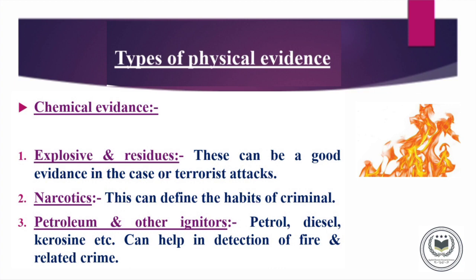Our next category is Chemical Evidences. Basically, we consider chemicals such as Explosives, Narcotics, Petroleum, and other Ignitors. There are three categories of Chemical Evidences in a Crime Scene: First, Explosives and Residues; Second, Narcotics; Third, Petroleum and other Ignitors. Explosives can cause a Fire, so anything explosive qualifies. Narcotics can also bring direction towards justice, so they are considered Chemical Evidences. Petroleum Products or Ignitors — such as Petrol, Diesel, Kerosene, and other Motor Oils — can also be considered as Chemical Evidences in a Crime Scene.